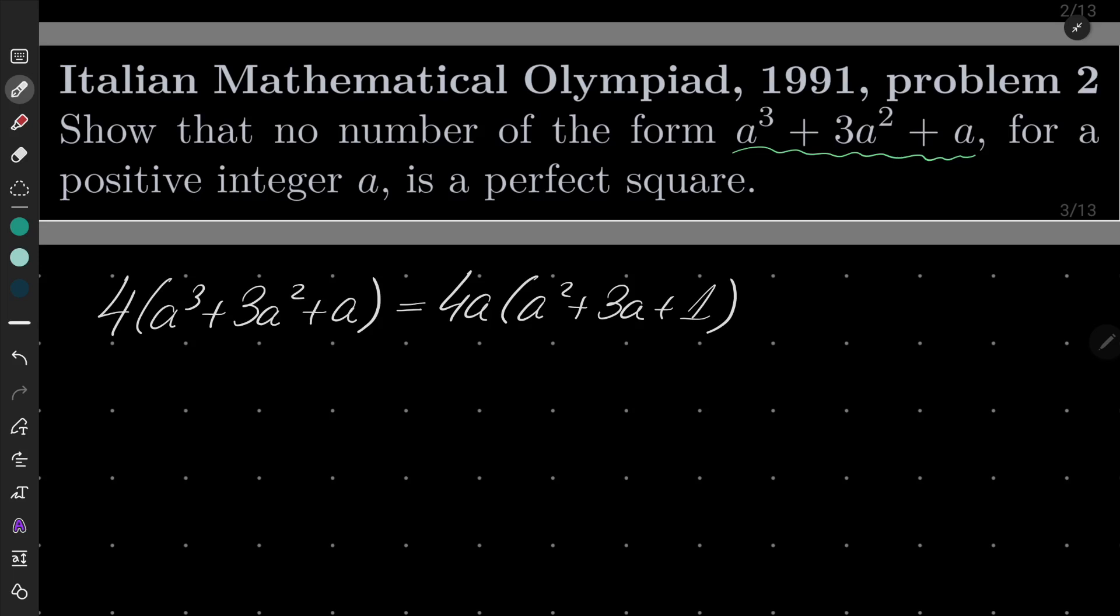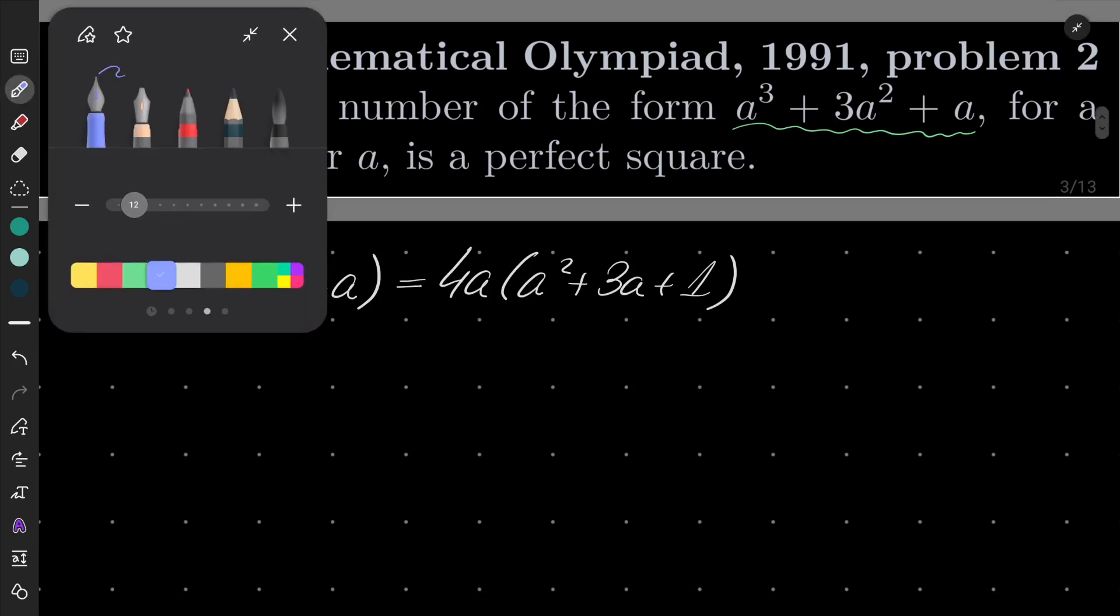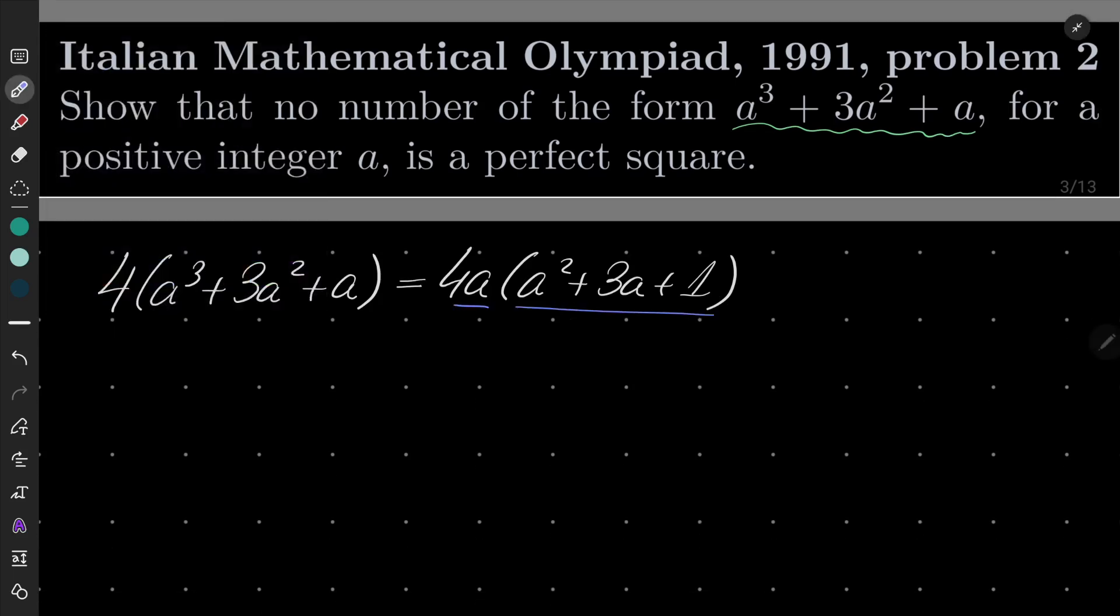And now let's notice that a and this number in parentheses, these numbers are coprime. Notice that a and a² + 3a + 1 are coprime.